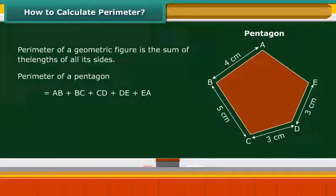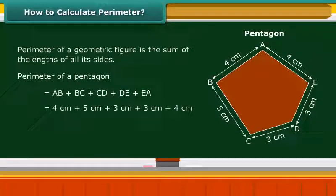DE as 3 cm and EA as 4 cm. The perimeter of the pentagon is 4 cm plus 5 cm plus 3 cm plus 3 cm plus 4 cm. That is equal to 19 cm.